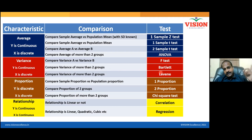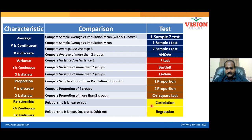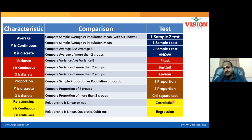In the improve phase, to arrive at the solution, you must use correlation and regression. Correlation and regression is about understanding the relationship between two continuous variables. Whether a relationship exists between X and Y is called correlation. What kind of relationship exists between X and Y is called regression.